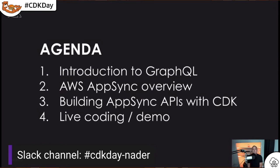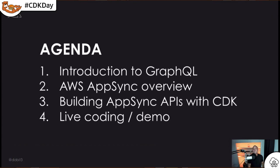Let's dive right in because we have a lot to cover. First, I'm going to do an introduction to GraphQL. We'll then look at AWS AppSync and how GraphQL fits into that, then look at how CDK classes and constructs allow us to use AWS services to build an AppSync API. And then we'll do a live coding demo, building an API from scratch, deploying it and testing it out.